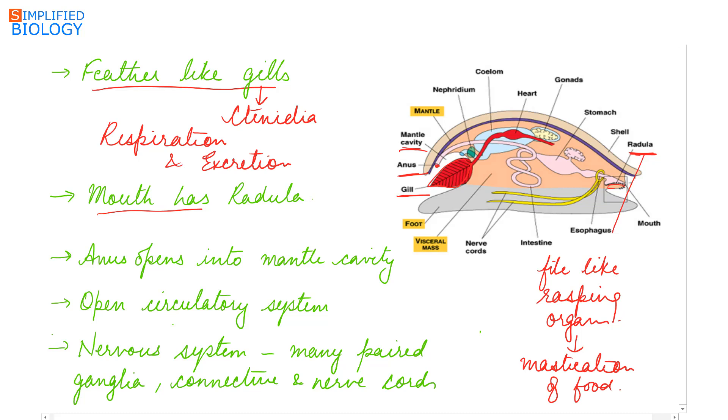The mouth has a file-like rasping organ called the radula which helps in feeding, while the anus opens in the mantle cavity. They have an open circulatory system. The nervous system has many paired ganglia, connectives, and nerve cords.